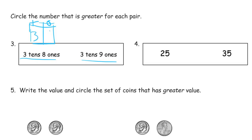So 3 10s, 8 1s. This has 3 10s, 9 1s. That's 38, that's 39. I'm going to circle 39 is greater than 38.